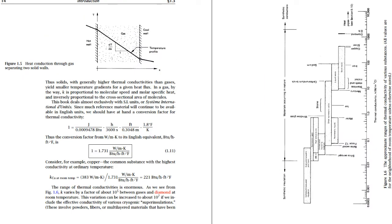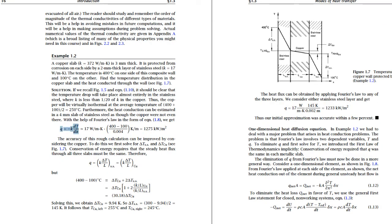And the Fourier equation that we've been using all along, which is essentially q equals negative k delta T delta x. Let's look at those equations next to each other.